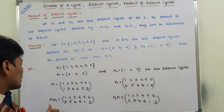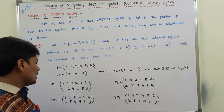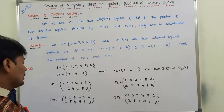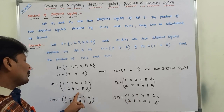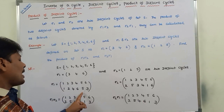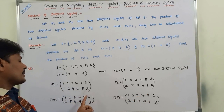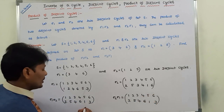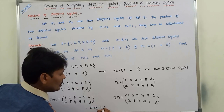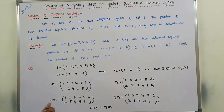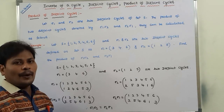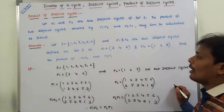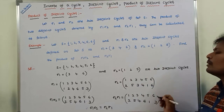Observe that σ1∘σ2 and σ2∘σ1 give identical results: 1→2, 2→5, 3→4, 4→6, 5→1, 6→3. Therefore, σ1∘σ2 = σ2∘σ1. This demonstrates that the product of two disjoint cycles is commutative. This is the process for finding the product of two disjoint cycles.